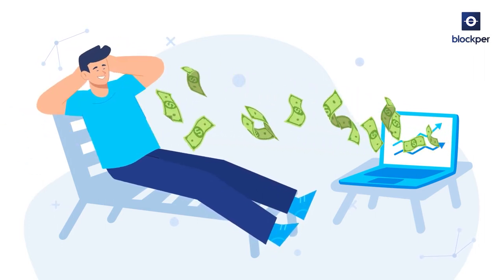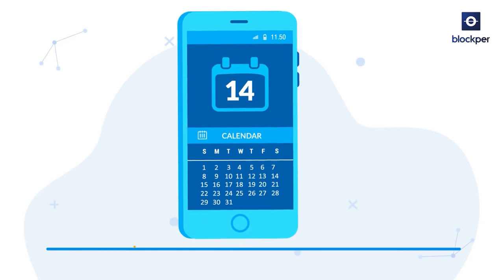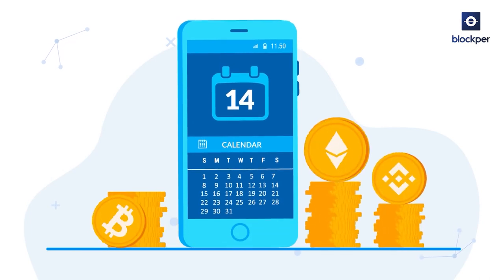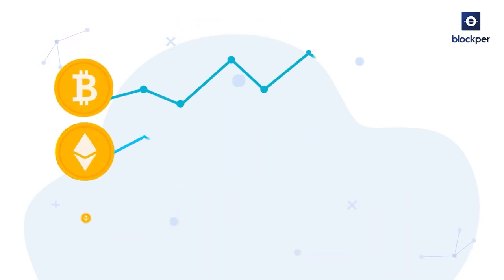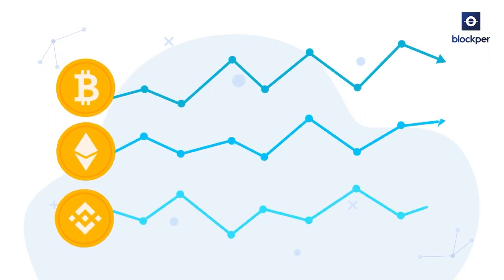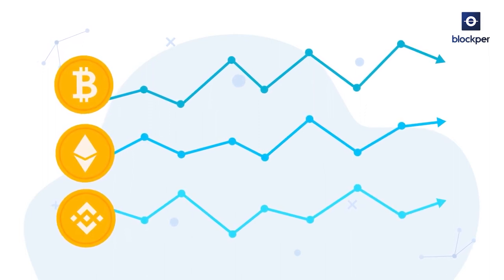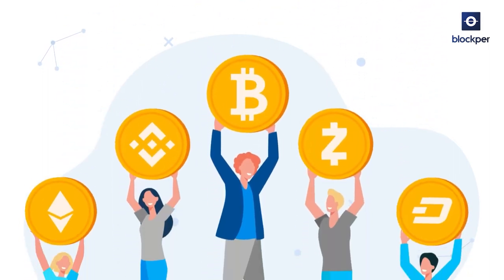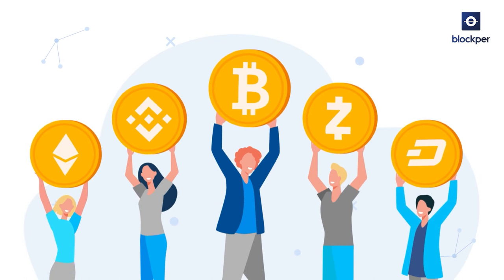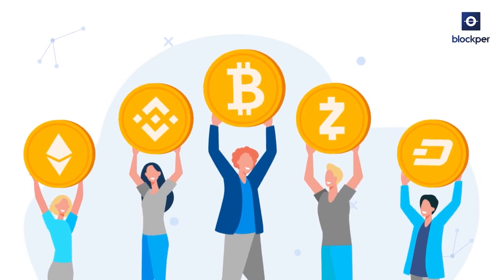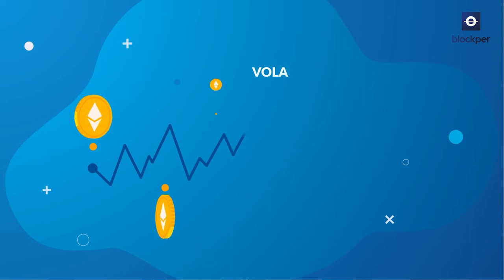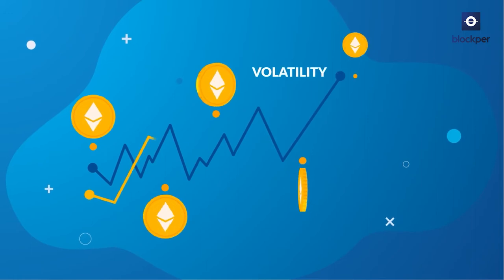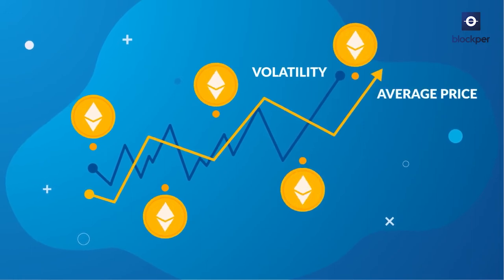DCA investors usually pick a few crypto assets, then make recurring purchases at set time intervals, regardless of the cryptocurrency's price at the moment. If you believe cryptocurrencies are going to be more widely adopted than they are now, then short-term volatility can be disregarded simply by averaging your buy-ins.